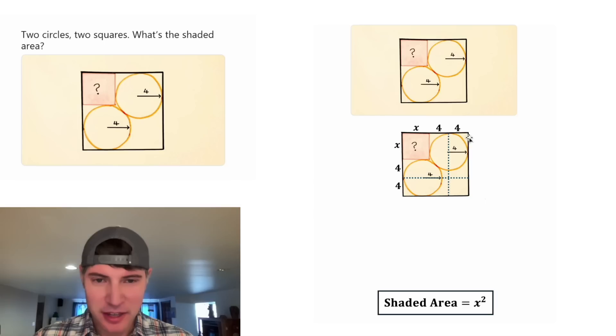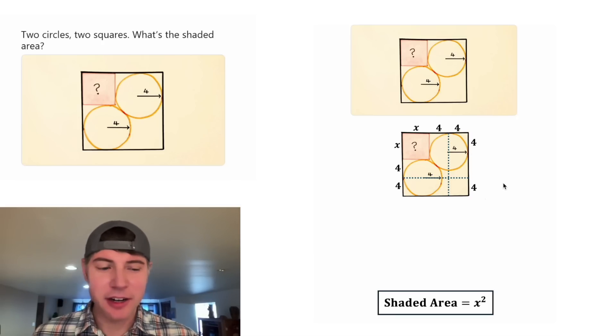Now let's go to this side. This portion right here will be equal to four, because it's a radius of this circle, and this portion will be equal to four. That means that this last piece from here to here has to be equal to X, because the side length is X plus four plus four.